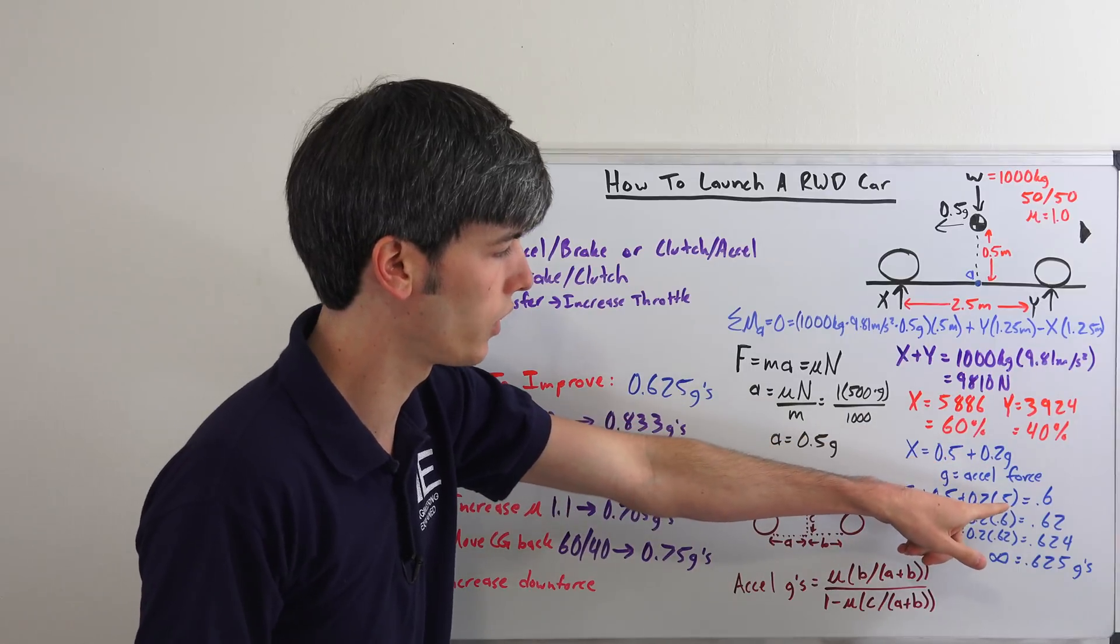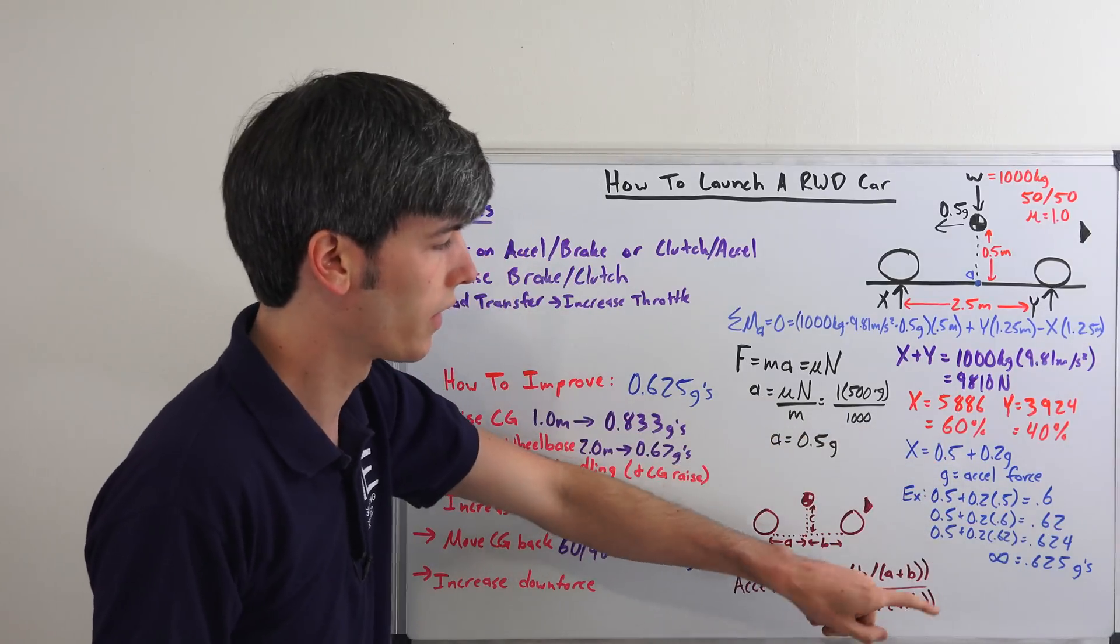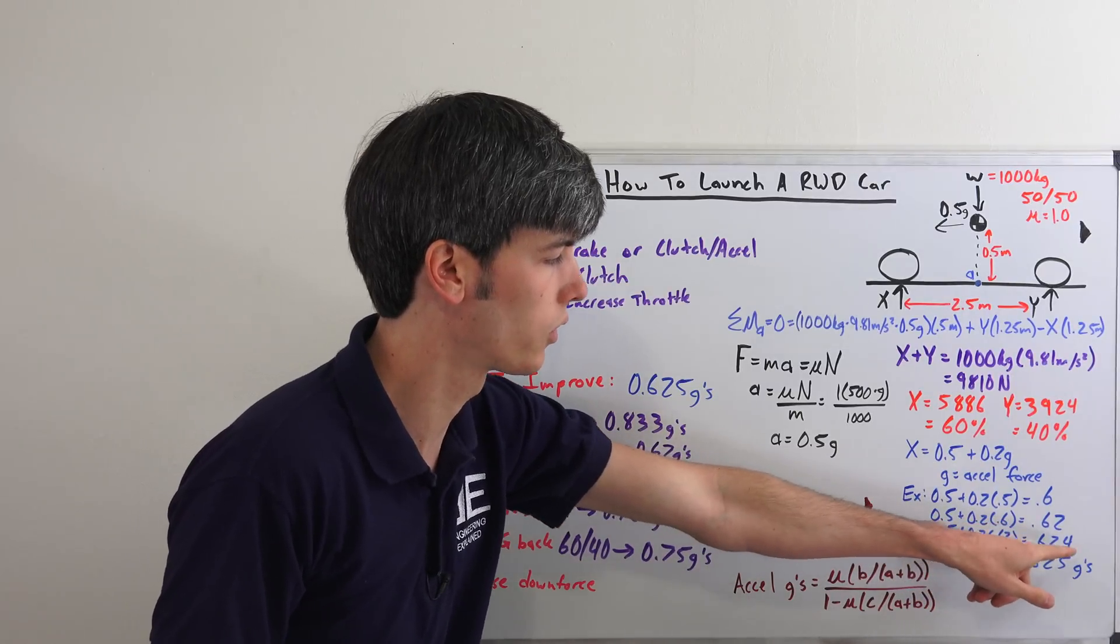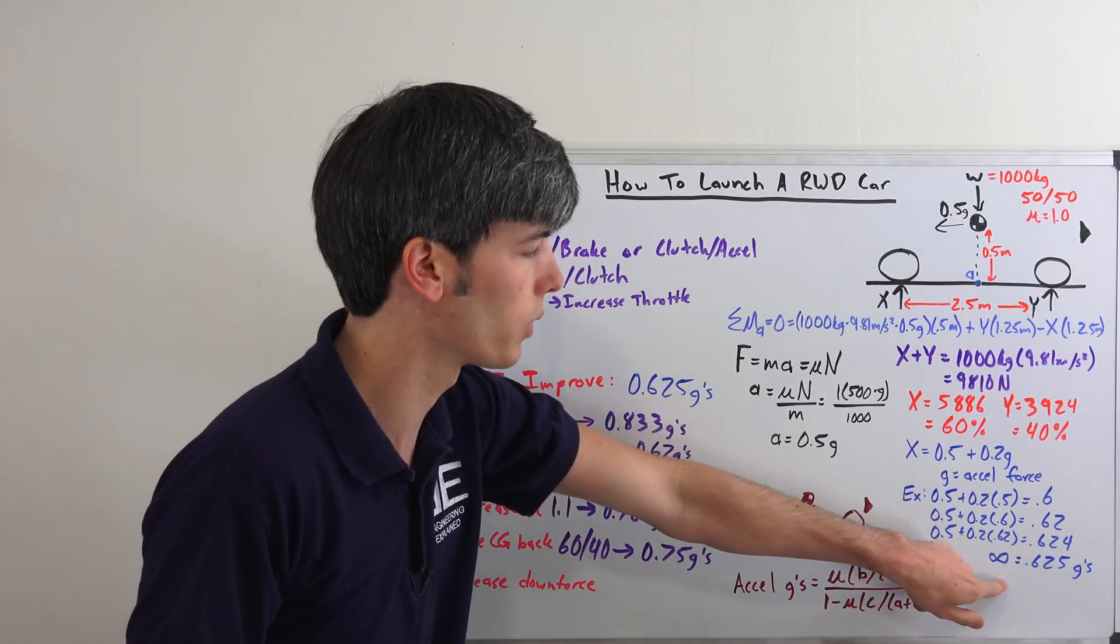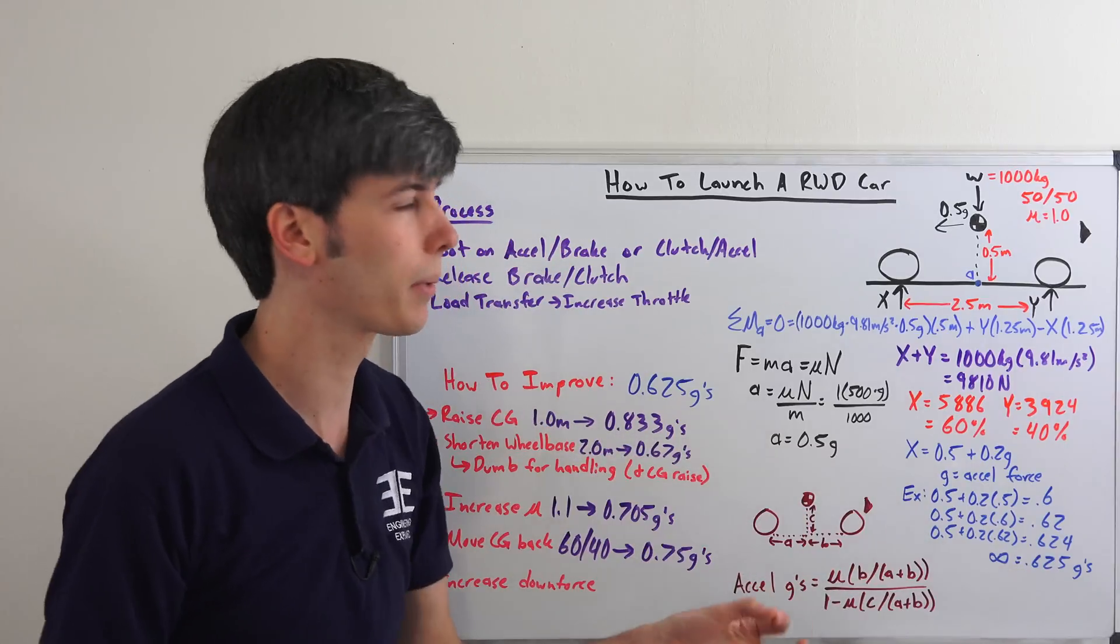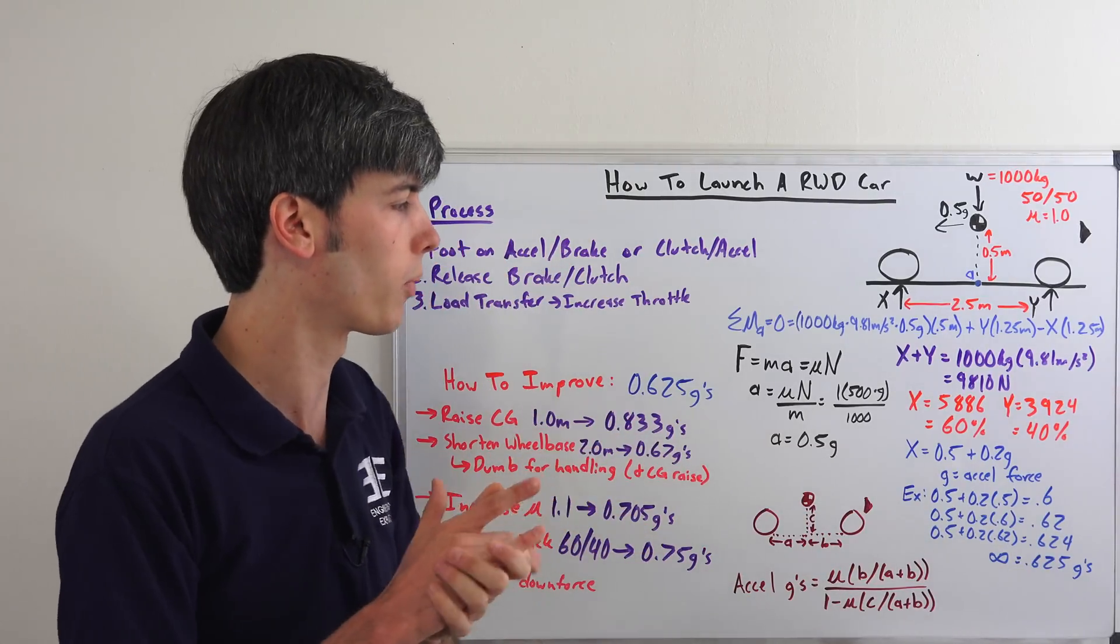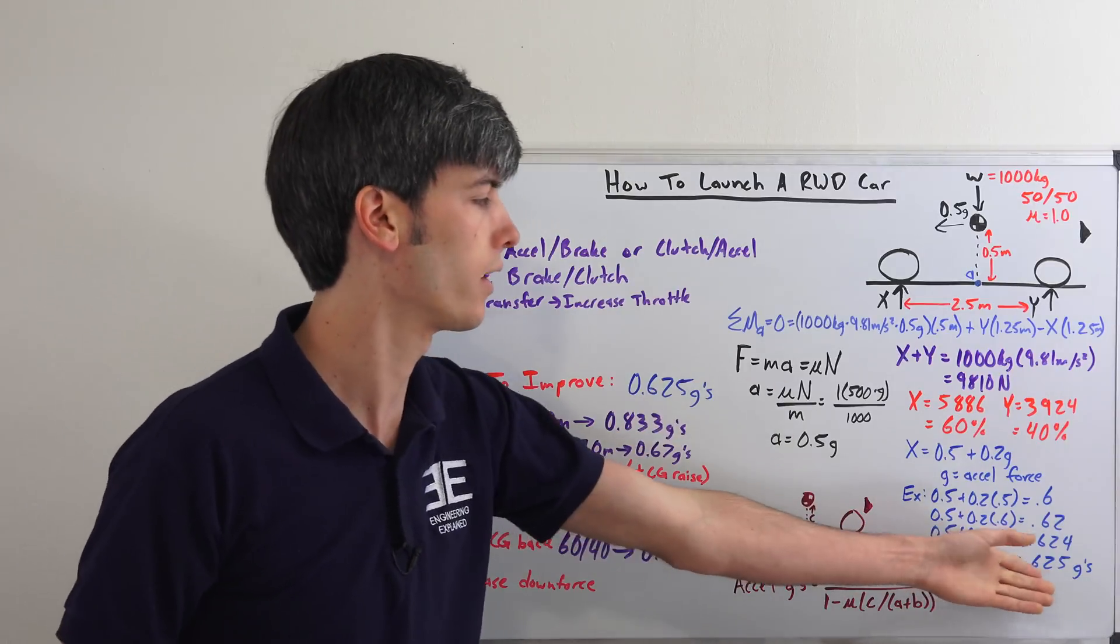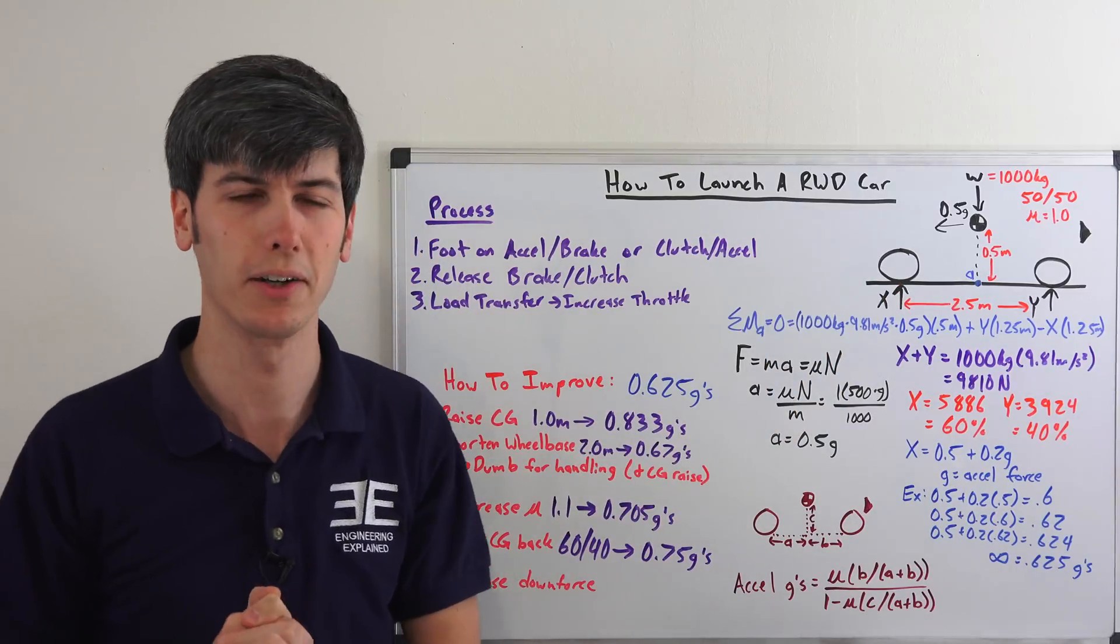Now that we're accelerating at 0.6 g's, we substitute 0.5 for 0.6. That gives us 0.62. Then we substitute 0.62 for 0.6. That gives us 0.624. And so it goes on forever and if you infinitely sum this up, you'll eventually come to the maximum acceleration for this vehicle is 0.625 g's. So that's the maximum rate where it balances out and you can accelerate at that constantly, so long as you have enough power to do so based on the traction of the tire.